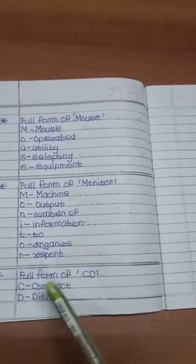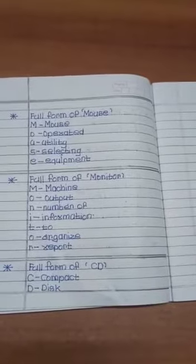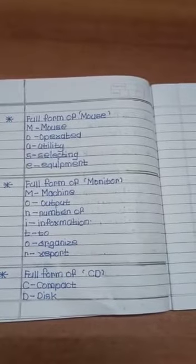Full form of CD. C means compact, D means disk.